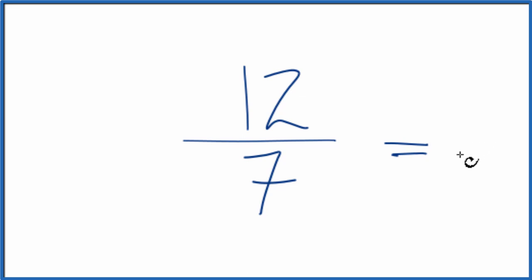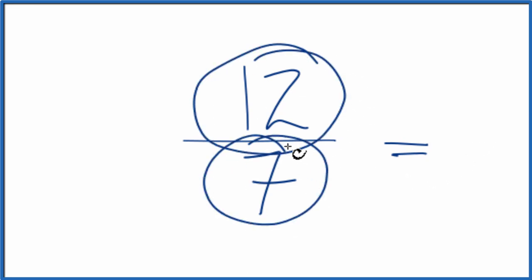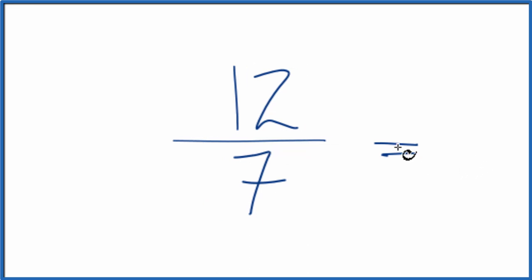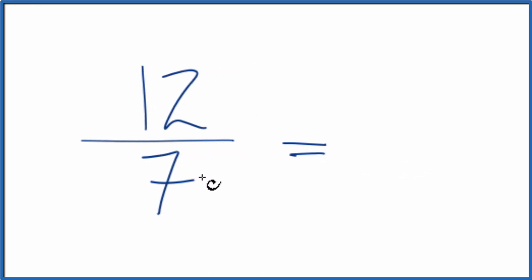What we need to do is find a common factor, something that goes into both 12 and 7 evenly. When I look at 12 and 7, the only number that goes into both 12 and 7 is 1.